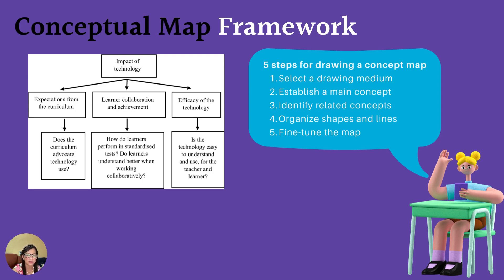Here are five steps for drawing a concept map. First, select a drawing medium — if you want it to look like a Venn diagram, that's up to you. Then establish your main concept. In this example, you're looking at the impact of technology and how it relates to expectations from the curriculum, learning, collaboration, achievement, and efficacy of the technology. If you notice, these are not cause-and-effect variables, so if this is the kind of thesis you have, do not do an IVDV — it should be a concept map like this. Then identify related concepts, organize the shapes and lines, and fine-tune the map.